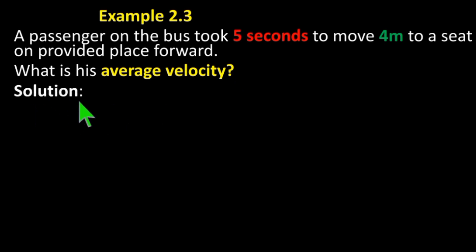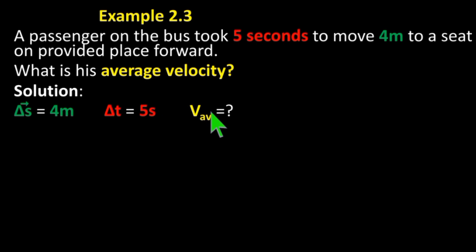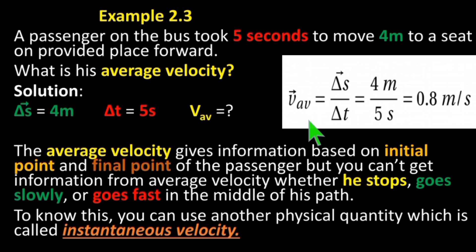Solution: Change in displacement is equal to four meters. Change in time is equal to five seconds. Required: average velocity.